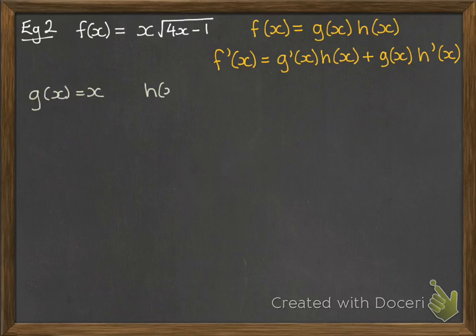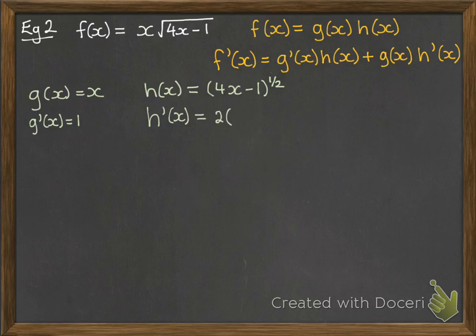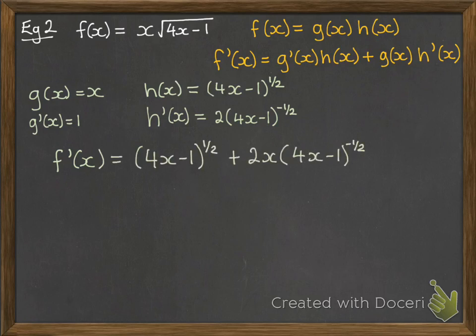All right, so g(x) is x and h(x) is the square root of 4x minus 1, which I'm going to write in exponent notation to make it easier to differentiate. So differentiate each of those. We get g'(x) is 1. h'(x) is, using the chain rule, 2 times (4x-1) to the minus half. If you can't remember chain rule, go look up the video. Okay, f'(x) then is the following. So it's the g'(x) times h(x) plus g(x) times h'(x).